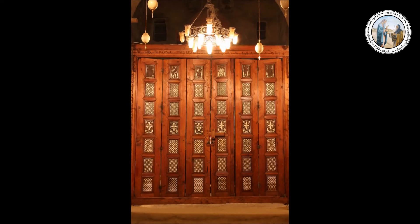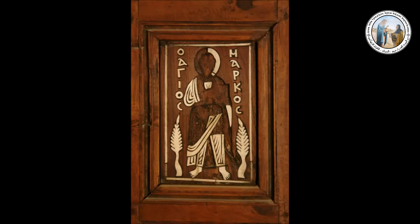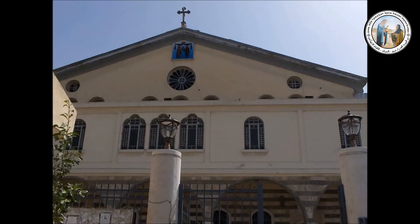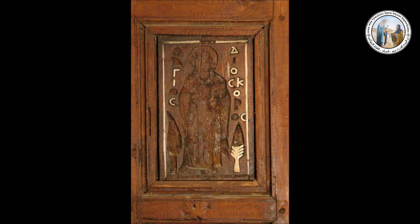The left foot of St. Mark the Apostle is advanced a little and he seems to have his right hand raised to his chest holding his cloak, while in his left hand he holds a book to his chest. The first and sixth icons represent St. Severus, Patriarch of Antioch between 512 and 518 AD, and Pope Dioscorus I, Patriarch of Alexandria from 444 to 454.